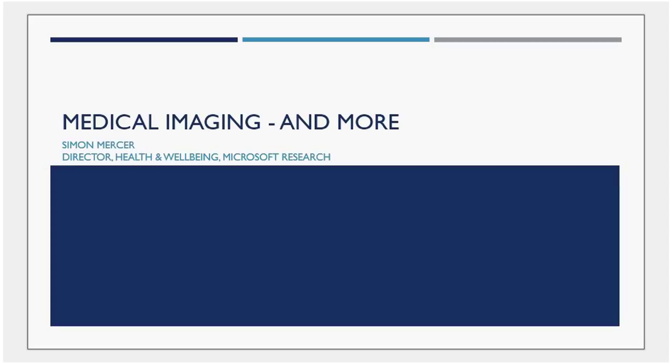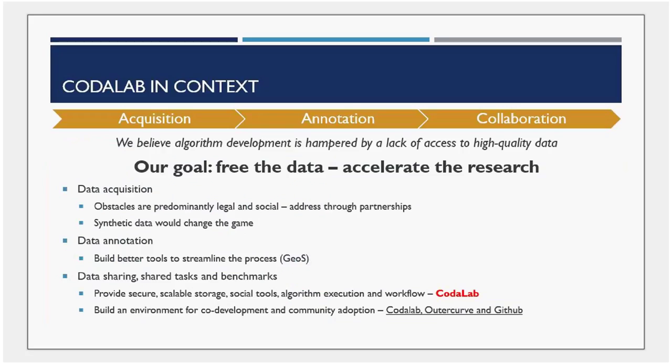Researchers are very interested in applying their theoretical computer science in different areas of research — that's really the genesis of our interest in medicine. Medical imaging is one field in which it's possible to obtain large quantities of complex image data, which is very useful for us to build algorithms and attempt to analyze in different ways.